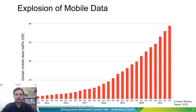Let's start with some data. This plot shows how much data we are downloading and uploading on our mobile networks versus time. The x-axis is time going from 2014 all the way to 2021. Riding on the success of LTE, we have seen a stunning growth in mobile data — more than 2000 percent — and you can clearly see the exponential trend here.